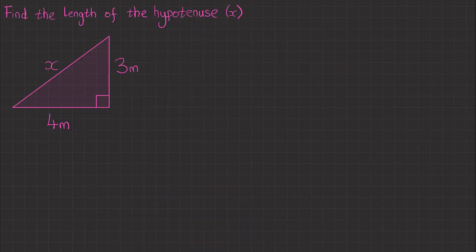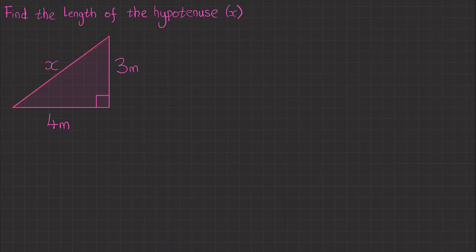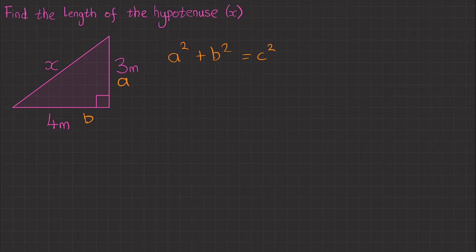This question is asking us to find the length of the hypotenuse x. This is the hypotenuse, which we know because it's facing the right angle. The first thing we want to do is write down Pythagoras' Theorem: a squared plus b squared equals c squared. Secondly, let's label the triangle — so we've got a, b and c.